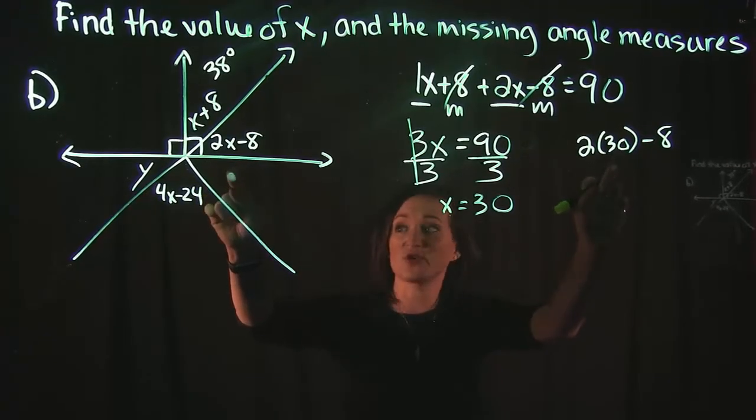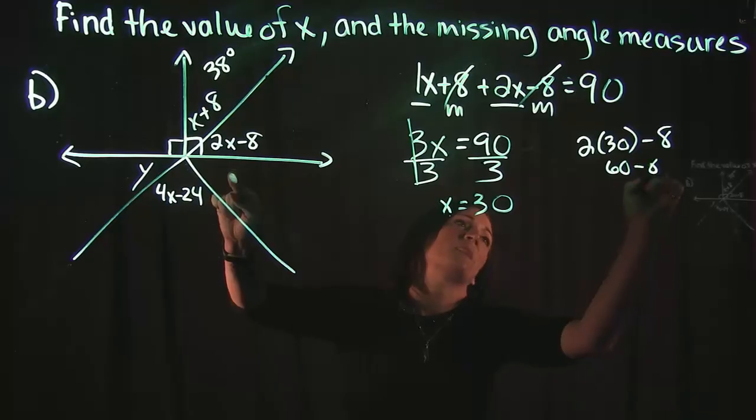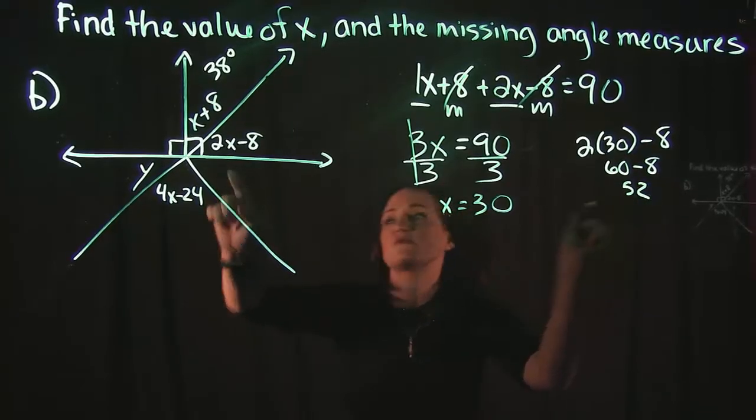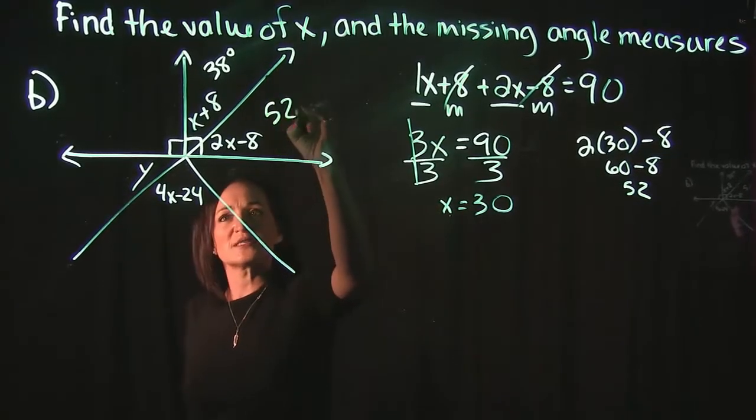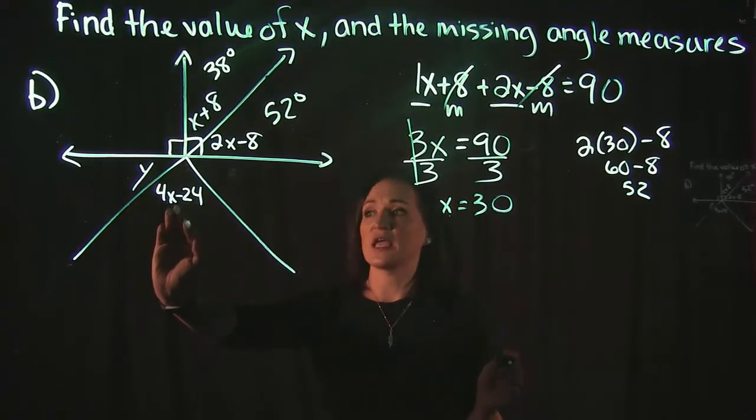We have 2 times 30 minus 8. 2 times 30 is 60. And 60 minus 8 is 52. So that means this one here has to be 52.